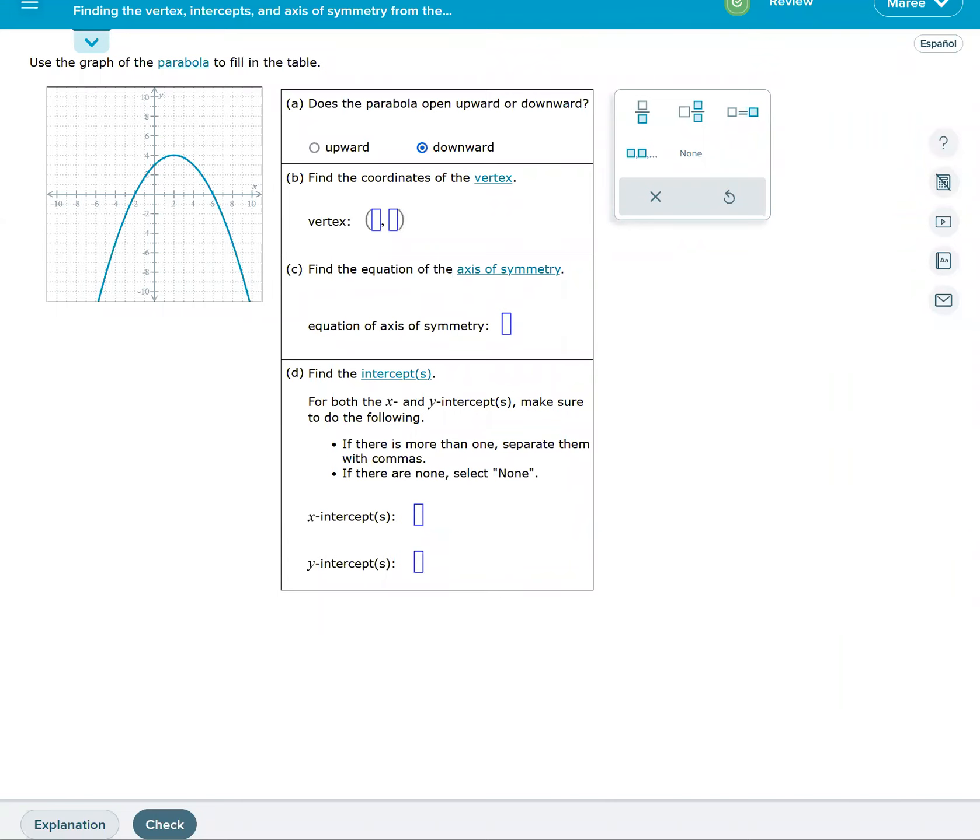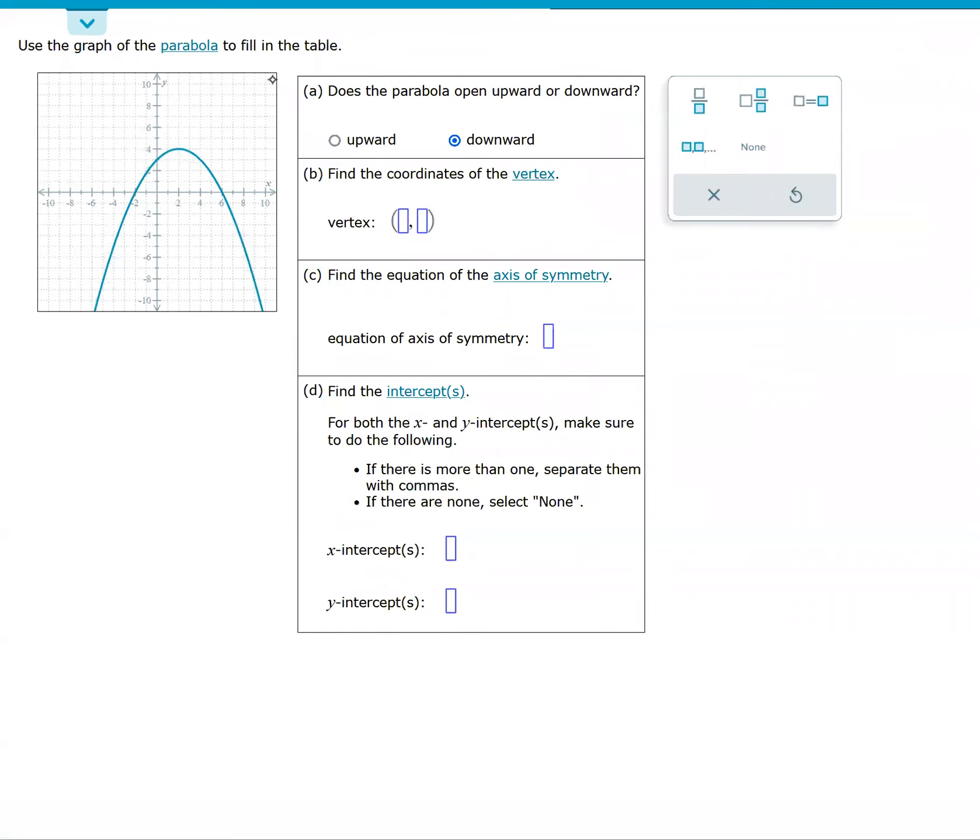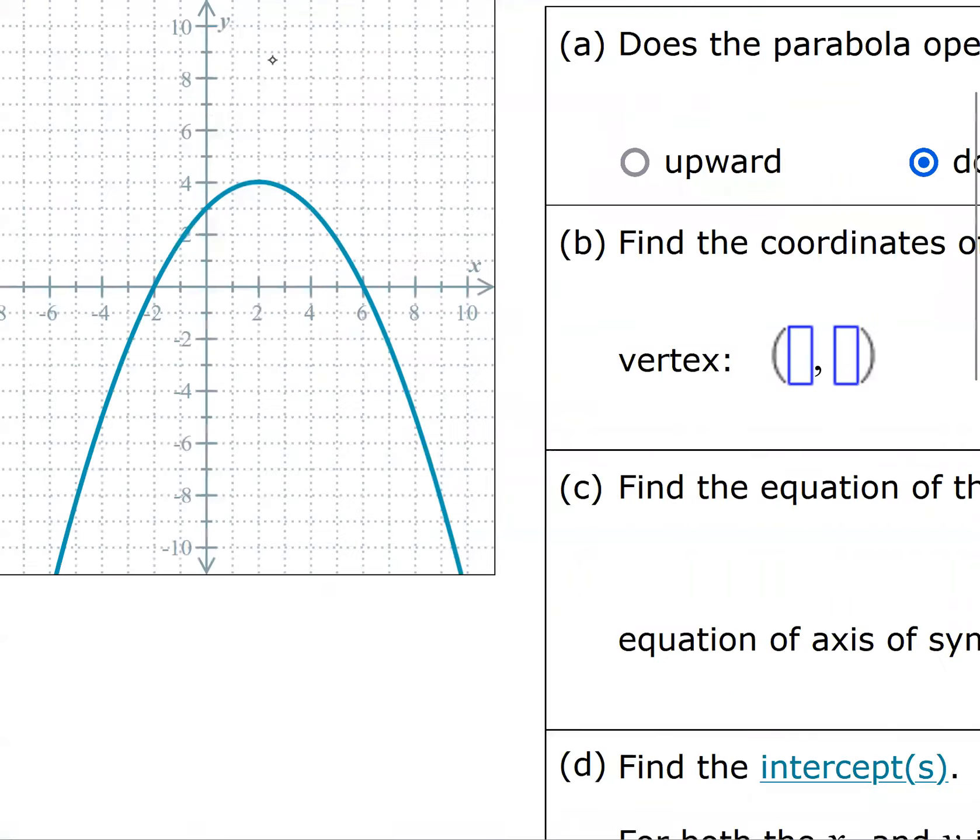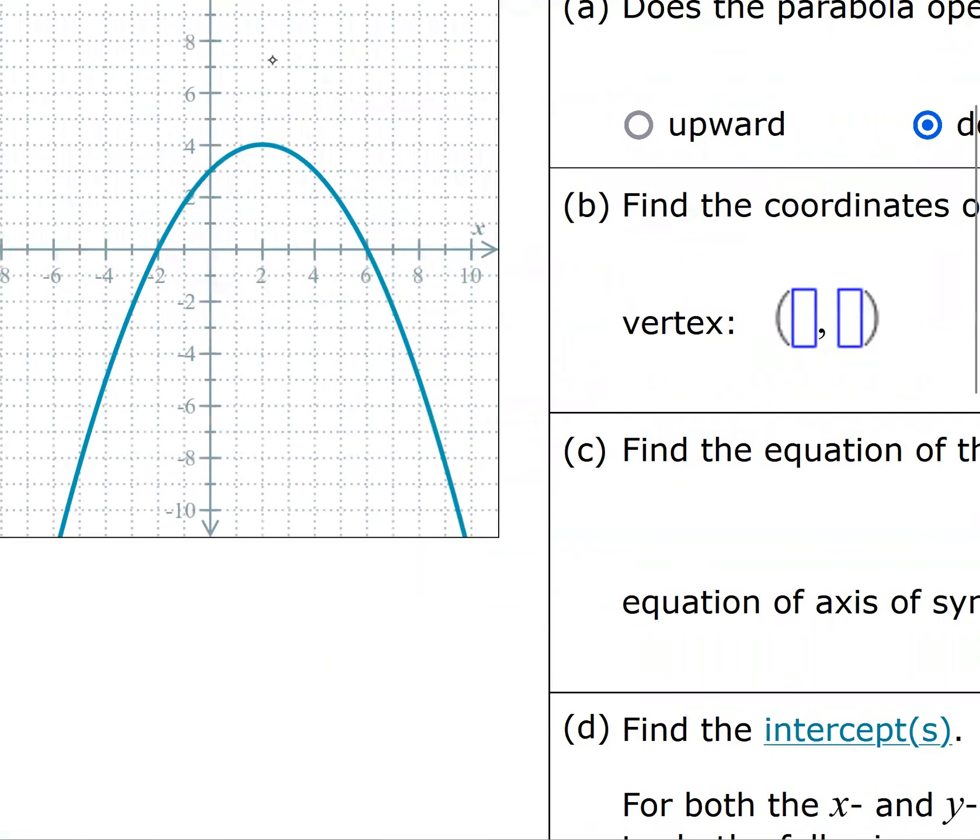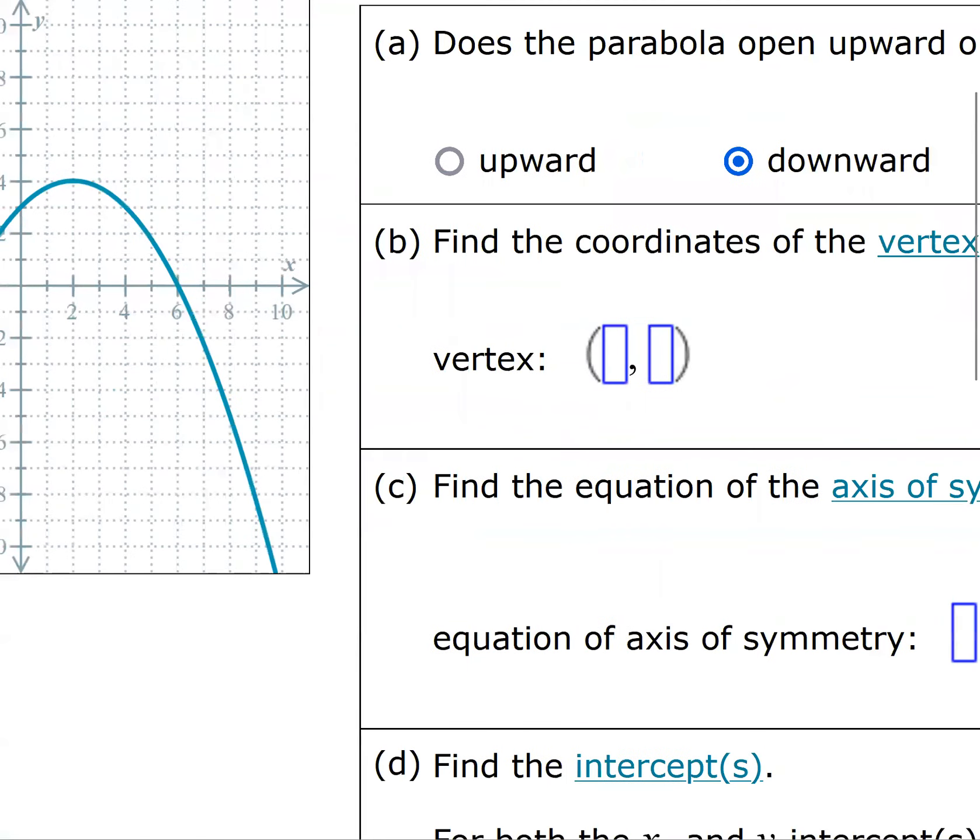The vertex is that top point where it turns, where the parabola turns. If we zoom in here, you'll see that this point is (2, 4), so we're going to type in (2, 4).